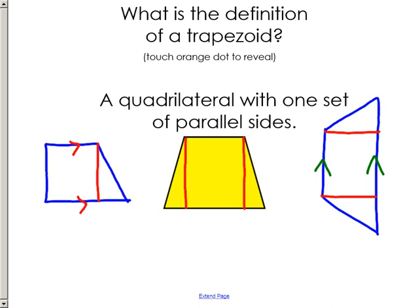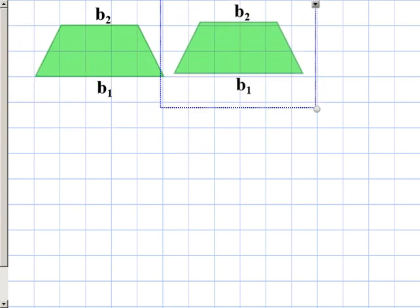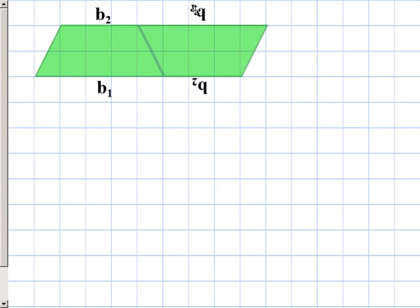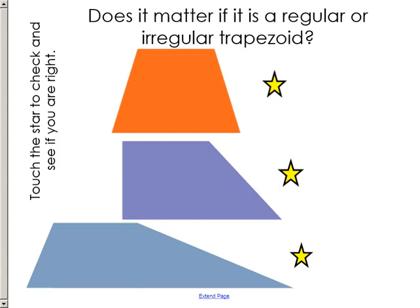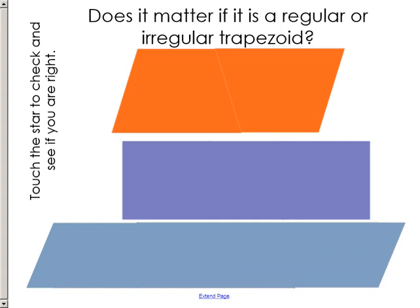Another approach: if you put two congruent trapezoids together by rotating one, they form a parallelogram. This works for every type of trapezoid — even when the result looks like a rectangle, remember a rectangle is a type of parallelogram. Every trapezoid, no matter its shape or size, will make a parallelogram when you put two congruent copies together.